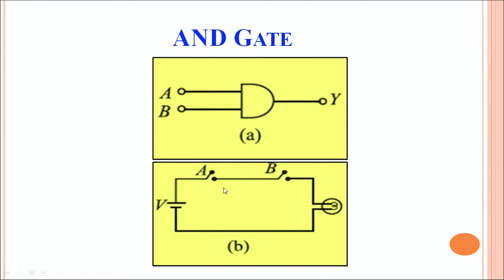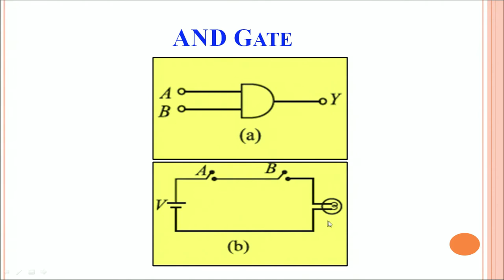Initially both A and B are in OFF mode, meaning input is 0,0. In this case the bulb does not glow, so output is 0. When one switch is closed — either A becomes 1 or B becomes 1 — the bulb still does not glow. Only when both A and B are closed does current flow through the circuit and the bulb glows, giving output 1. The output is 1 only when both A and B are 1.